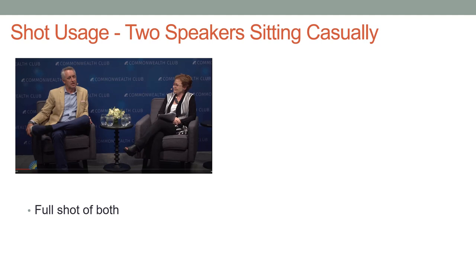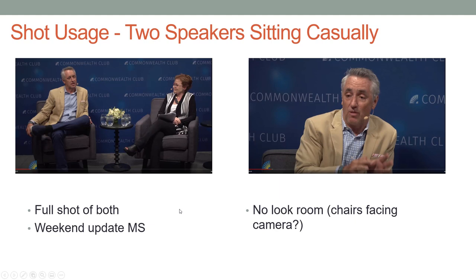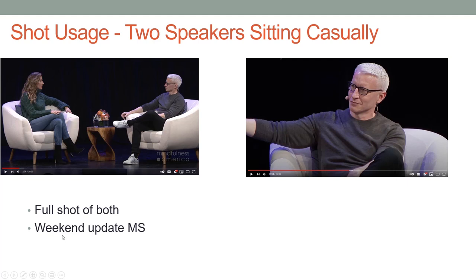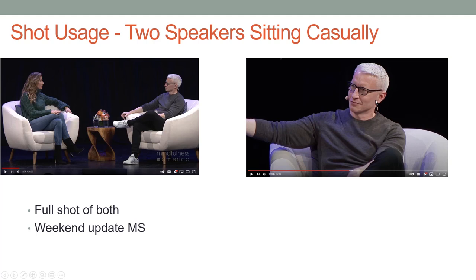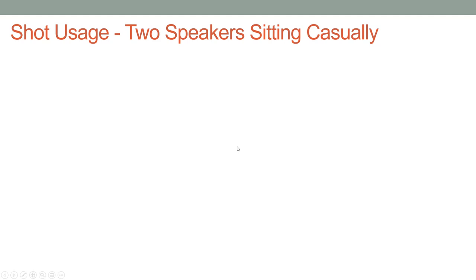I wanted to cover another set of scenarios where we have two speakers sitting casually. Typically here, you're going to start with the full shot of both, whether you're single camera or multiple cameras. And then you're going to want to go to close-ups for both speakers. Here we see a weekend update medium shot where we're at his elbows, but there's no look room — he's pretty much facing the camera. And this is Gisele and Anderson Cooper. We see the full shot of both — shoes to top of head — and then we get to a weekend update medium shot. She's right in the center of the frame, even though she's looking off at Anderson. In this case, I would probably move her to maintain the look room that I think is appropriate when you're not staring directly at the camera.